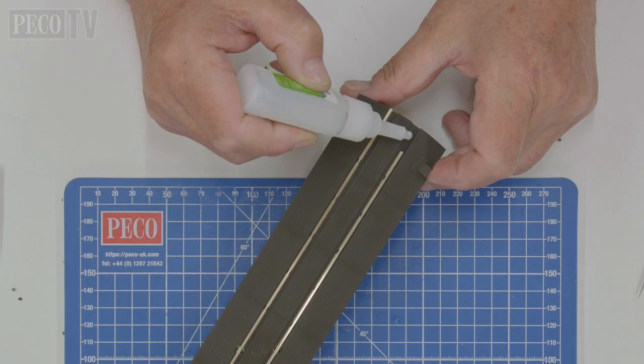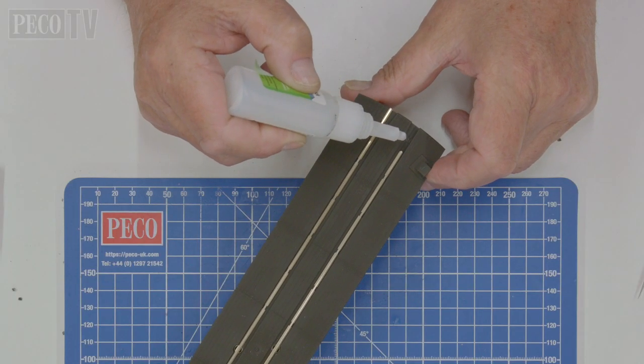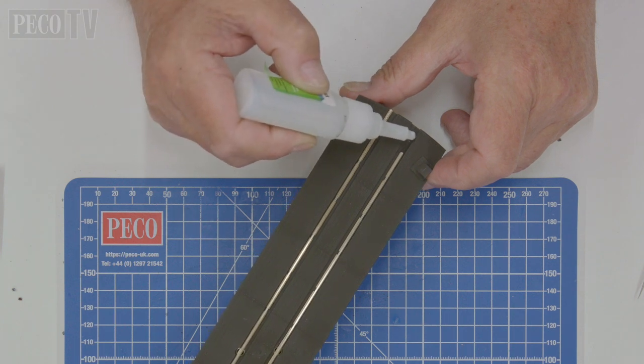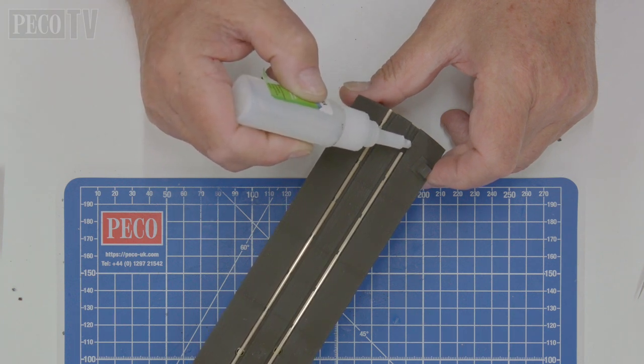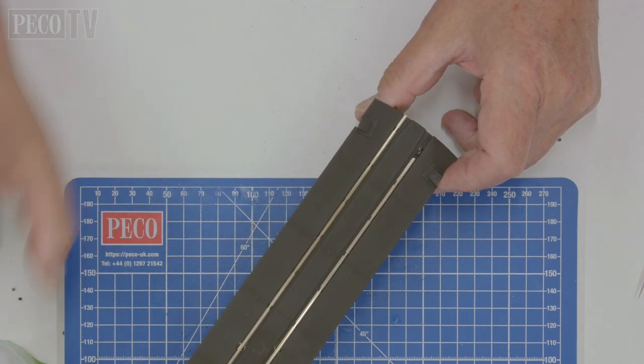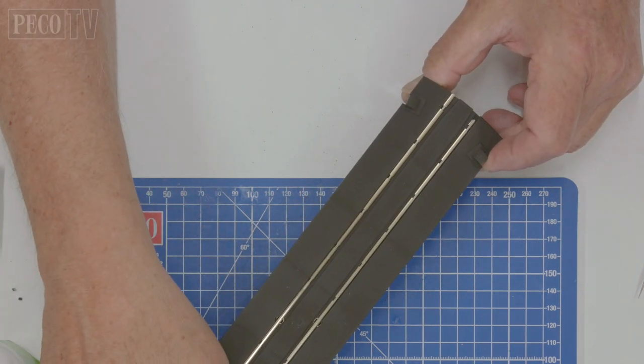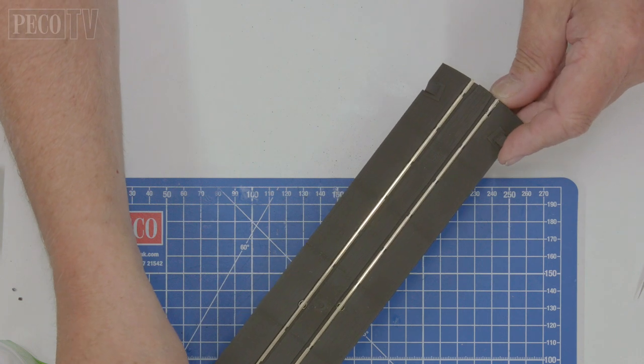When the rails are in position on the deck, make sure that they do not protrude at either end and will not touch the rails at the approaching track. When satisfied all is well, glue the rails into place to prevent any movement.